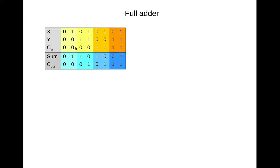Here's the truth table for the full adder circuit, adding two bits together with a possible carry-in. If all inputs are zero, sum is zero with no carry. Adding 1 to all zeros gives sum of 1, no carry. Adding 1 and 1 gives 2 — so the same-bit-position result is 0 with a carry-out of 1. Adding three ones gives 3 (binary 11), so sum is 1 with carry-out 1.